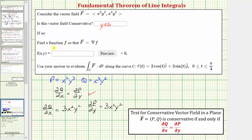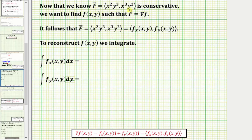Now let's work on determining the potential function f(x, y). We know the given vector field is conservative, and we want to find f(x, y) such that F equals the gradient of f. The gradient of f has components ∂f/∂x and ∂f/∂y, which means x²y³ must equal ∂f/∂x, and x³y² must equal ∂f/∂y. We'll integrate to reconstruct f(x, y) — integrating the x-component with respect to x and the y-component with respect to y.